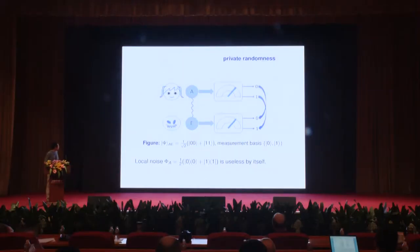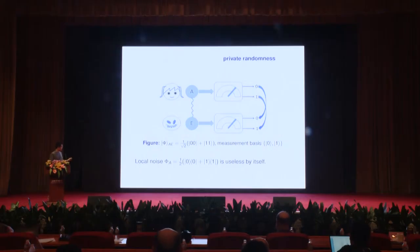The security comes from the fact that the pure state has no correlation with any other quantum system. Now consider the case when Alice and Eve share a real state. Alice can still generate randomness, but it is not private because Eve can learn the random value by performing the same measurement on her system. The reduced state of Alice is the maximally mixed state, which is regarded as local noise in our work, and local noise itself is useless to generate private randomness.